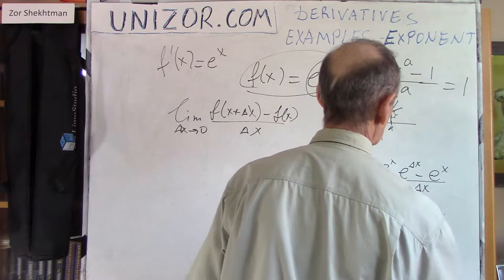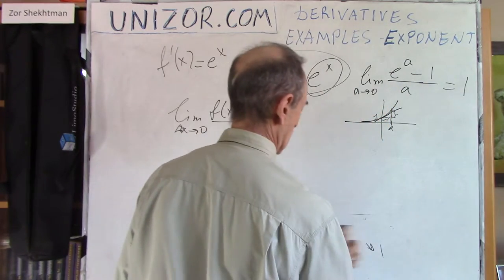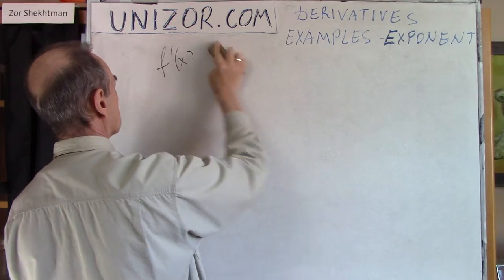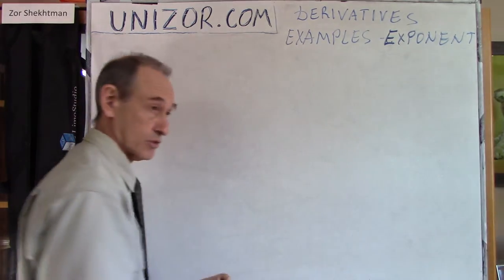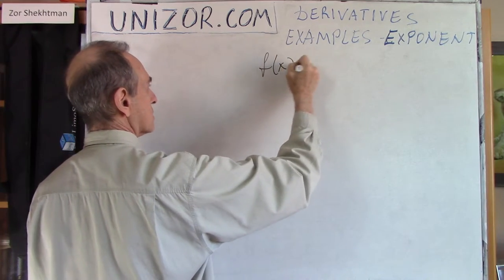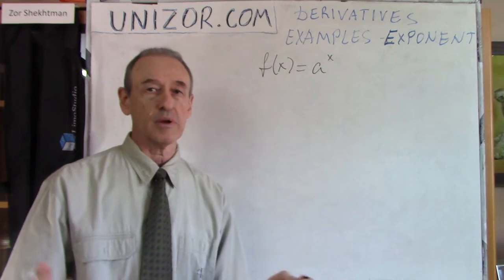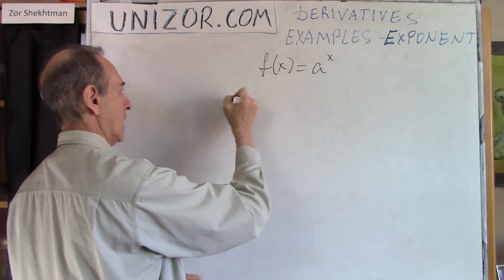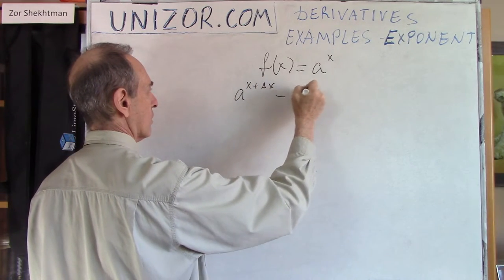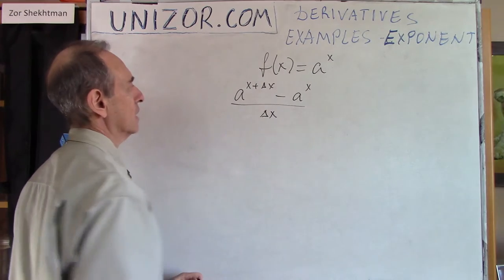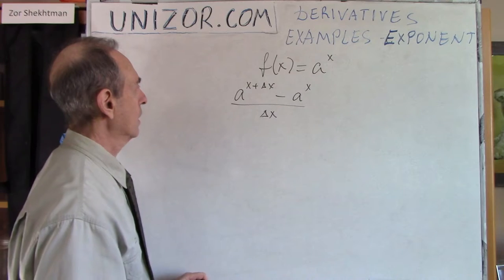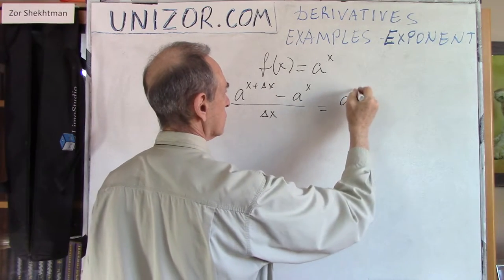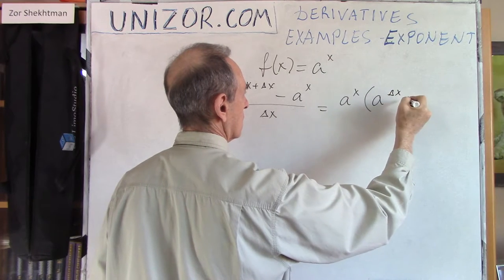That's e to the power of x. Now, what other exponential functions can we take the derivative from? Another exponential function is the general one: f(x) equals a to the power of x, where a is some positive number — any positive number. So what do we need? We look at a to the power of (x + Δx) minus a to the power of x, divided by Δx, and we find the limit of this as Δx goes to zero. We do the same — this is a to the power of x times a to the power of Δx.